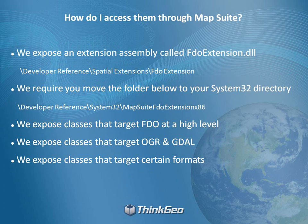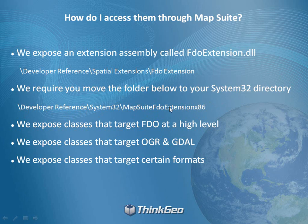How do you access these through MapSuite? We've exposed this functionality as an extension assembly called the FDO Extension. You'll find it under where you installed the product, under Developer Reference, Spatial Extensions, and then FDO Extensions. There's an FDO Extension DLL you need to reference in your project, which comes under the same core MapSuite namespace. You're also required to move the folder below the System32 directory — you'll find it under Developer References, System32, called MapSuite FDO Extension x86. You need to move this directory under your System32.